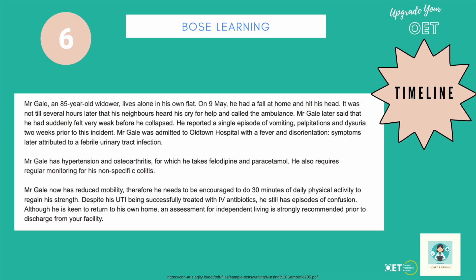Finally, number six on your tick list is the timeline. Make sure throughout your letter that anything that has happened and when it happened is very clear. For example: on the 9th of May he had a fall, he actually felt ill two weeks prior to that, and he now has reduced mobility. Make sure the timeline is clear so the reader knows what happened and when. It's something students often forget, which is why it's on the tick list.